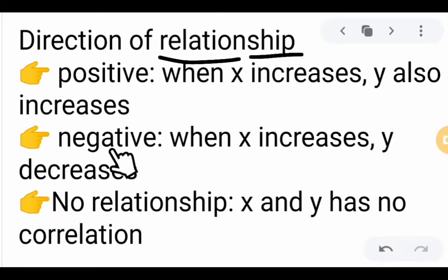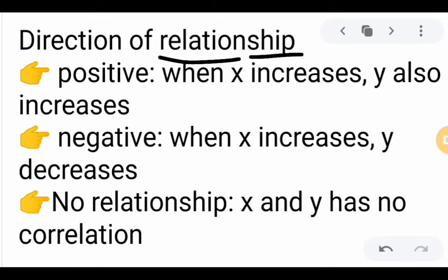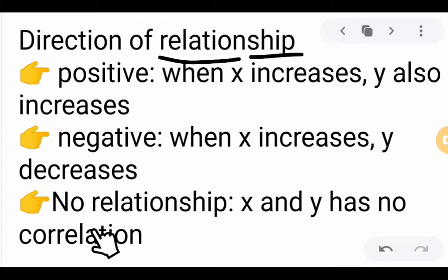For negative correlation, when the x variable increases, the y variable decreases. For example, when many people get vaccinated, there will be less COVID transmission. There is also no correlation at all, where x and y variables have no relationship — for example, a mother dog giving birth to a kitten. It doesn't add up.